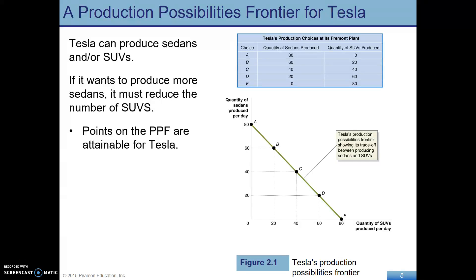Here's an example of a PPF. Tesla can produce — notice we have sedans or SUVs on this axis. Given its current resources, that balance of labor and machinery, it can produce 80 sedans. If it produces 80 sedans, that means there will be no SUVs produced. Anywhere along this line would be feasible combinations of the two — sedans and SUVs. So if it makes 60 sedans, it could produce 20 SUVs.